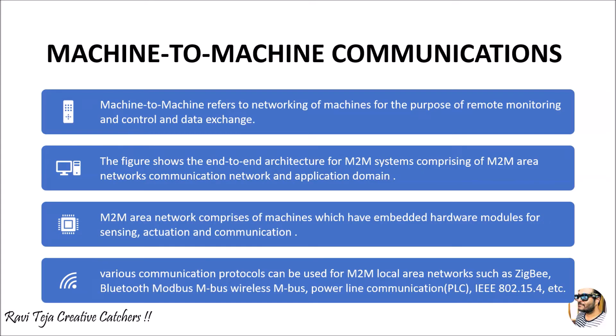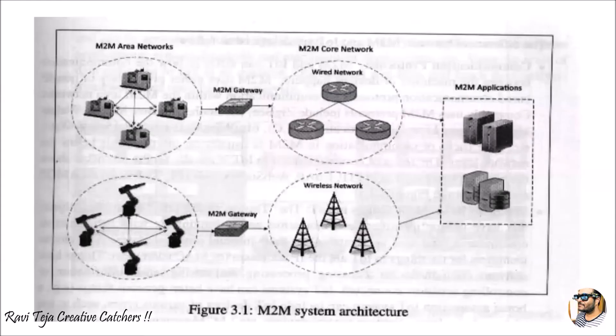We will be using communication protocols like Zigbee, Bluetooth, Modbus, M-Bus, Wireless M-Bus, Power Line Communication (PLC), and also IEEE 802.15.4, among many more protocols. All these protocols are considered for machine to machine communication in a local area network which is very nearby. Let's see the diagram.